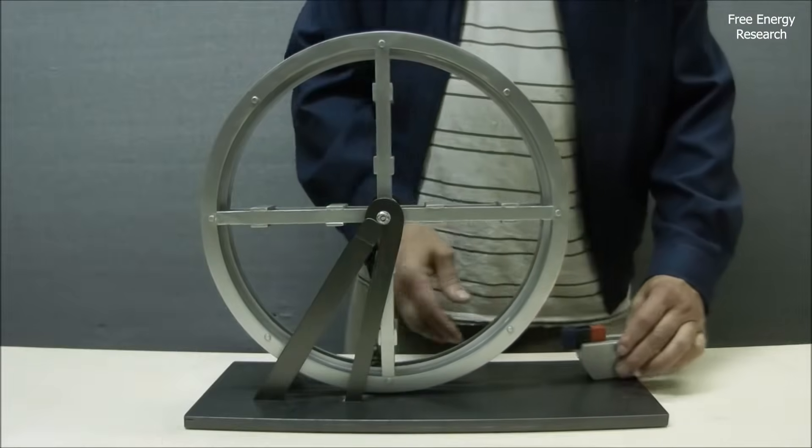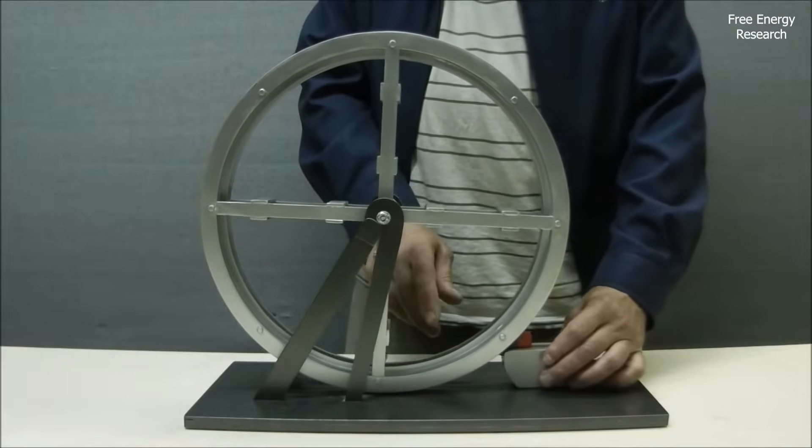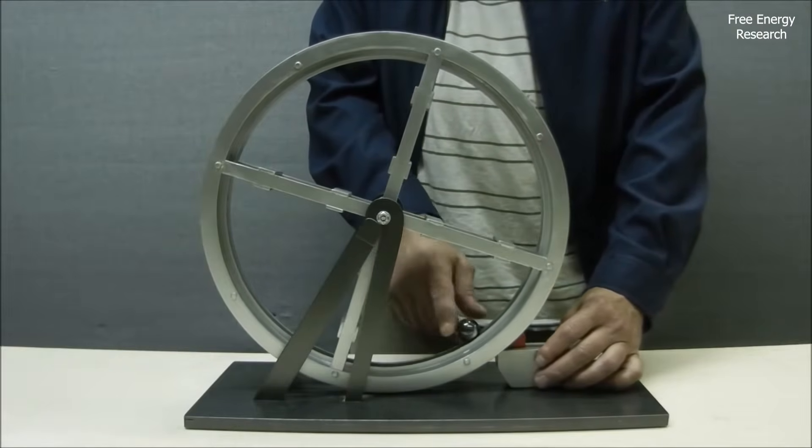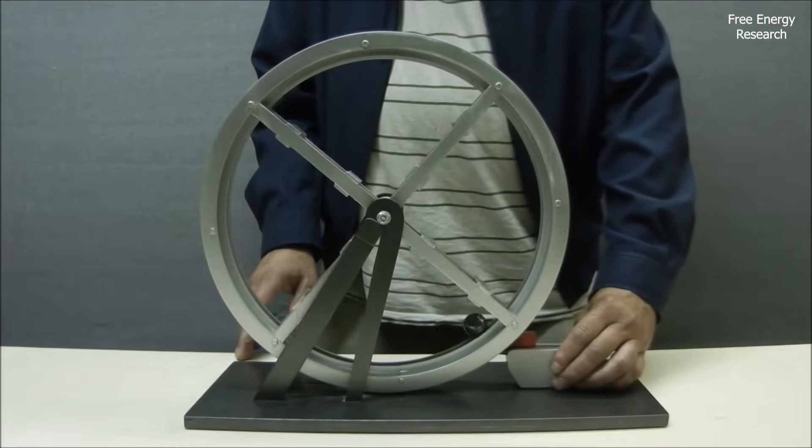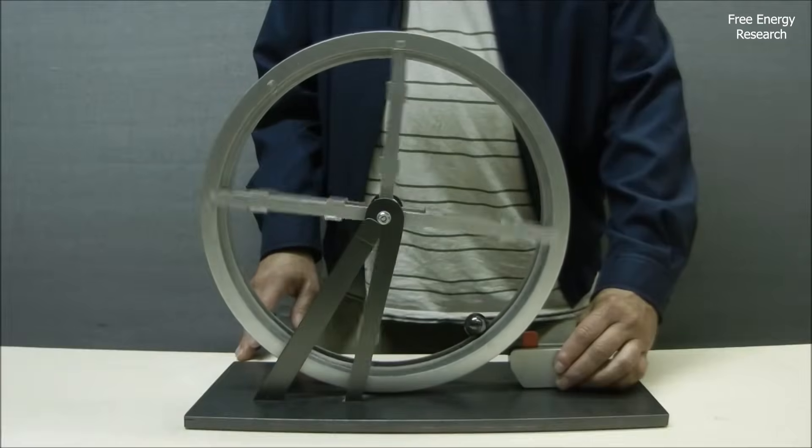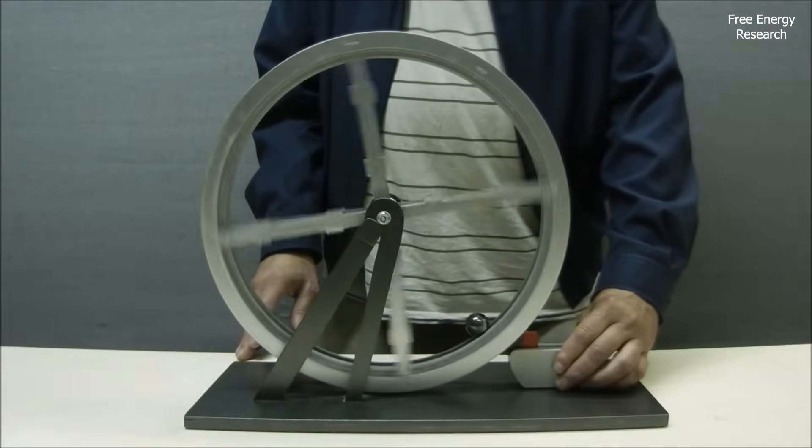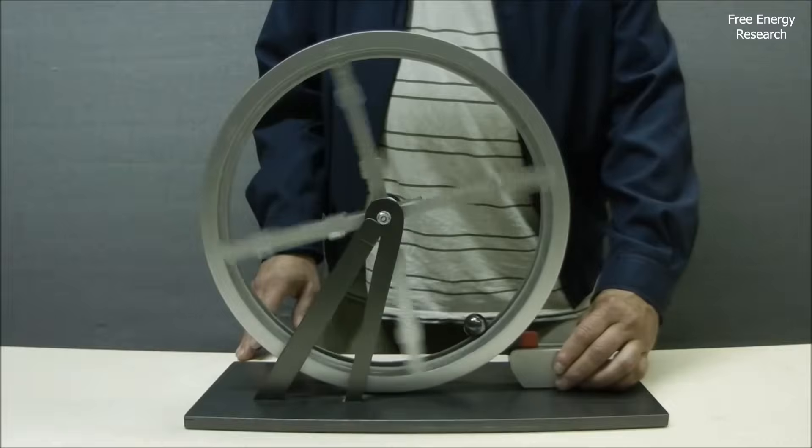The concept is simple. A metal ball moves inside a grooved track along the wheel. A strong magnet is positioned at the lower part of the wheel to attract the ball, pulling it downward and creating an imbalance.